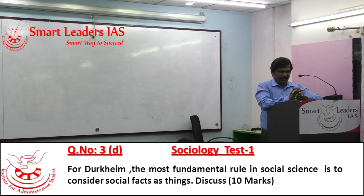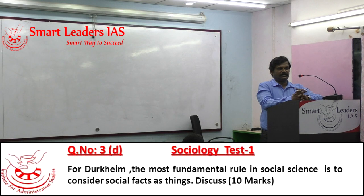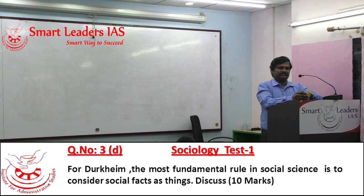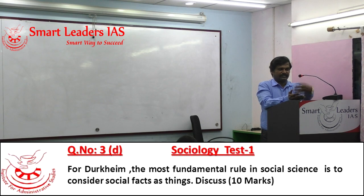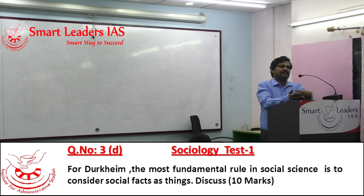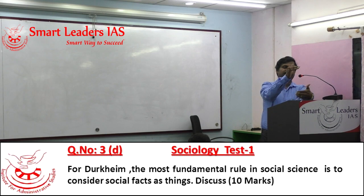He applied this rule in his study of suicide. He studied suicide as a fact, collected data on it, and treated it as a thing — external to the individual, independent of the individual, constraining the individual, and generally diffused. So suicide is not individual-dependent; suicide is dependent on the suicidogenic current generated by society.